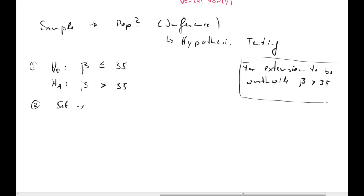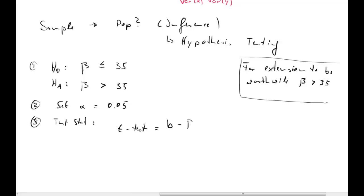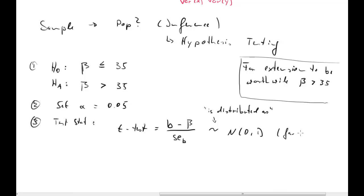Now we need the test statistic. We use a t-test with formula: b minus the hypothesized value divided by the standard error of b, written as SE(b). This is distributed as standard normal for large samples. There are actually a heap of other assumptions, but you can learn all about those in a third-year econometrics class.